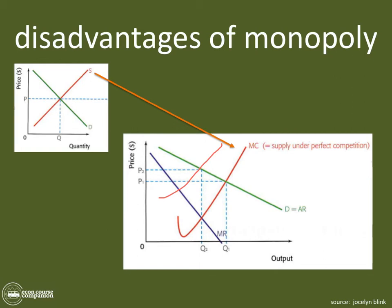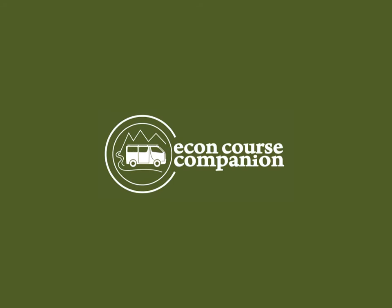So there are more disadvantages for society as a whole of having a monopoly over perfect competition, which makes sense — one big firm interested in maximizing profits will create disadvantages for society. However, if a monopoly can take advantage of economies of scale and reinvest its abnormal profits into research and development, there could be real advantages to having a monopoly.